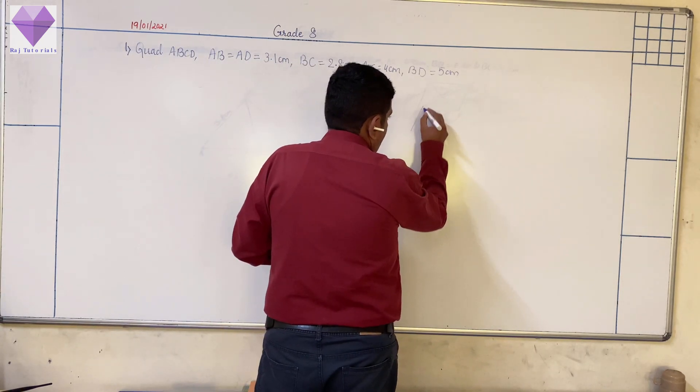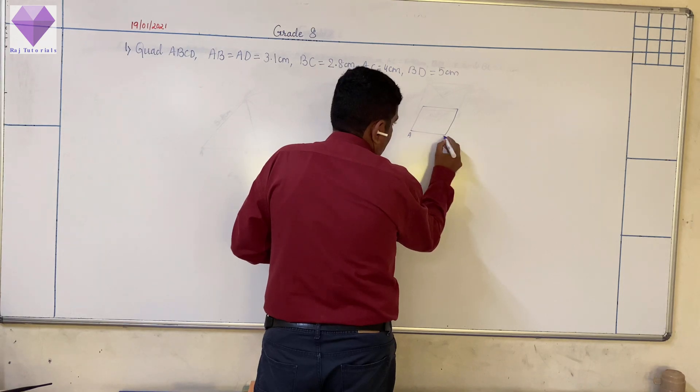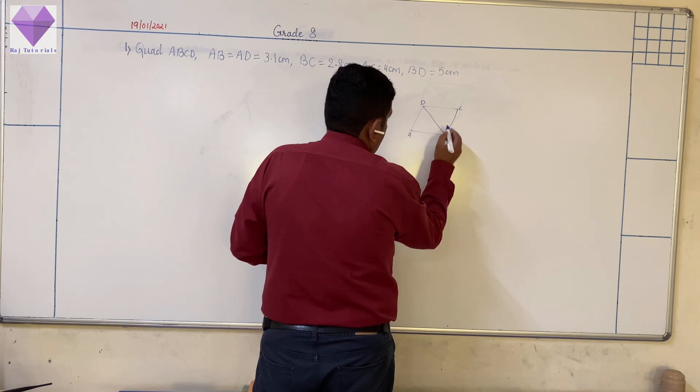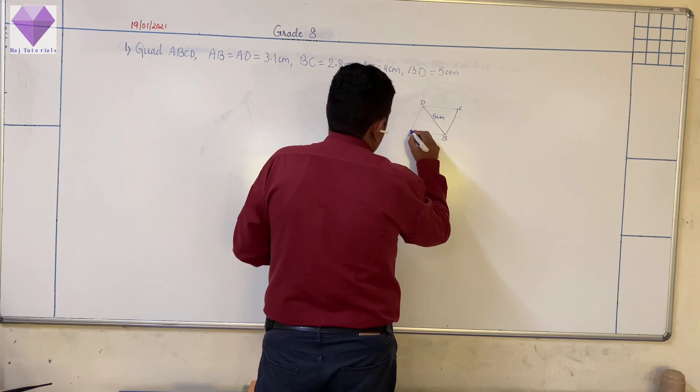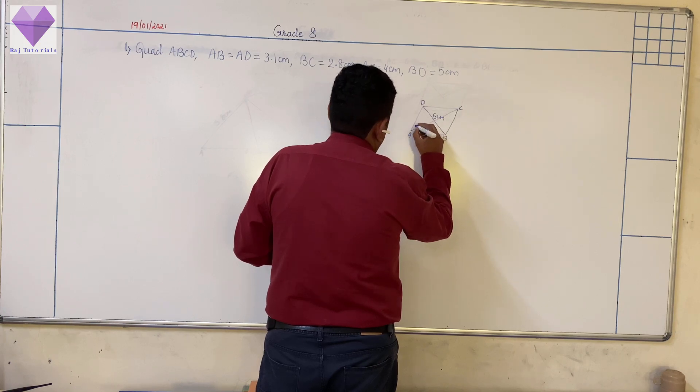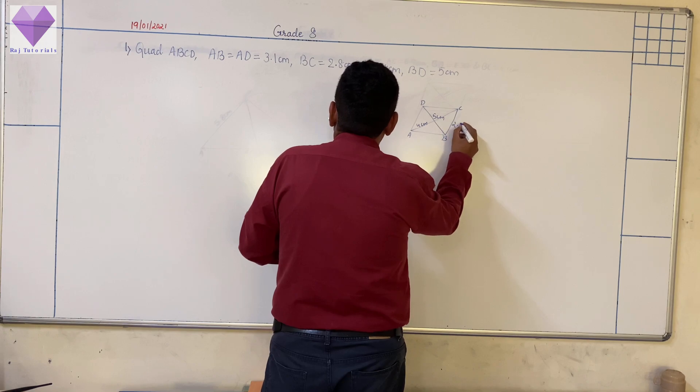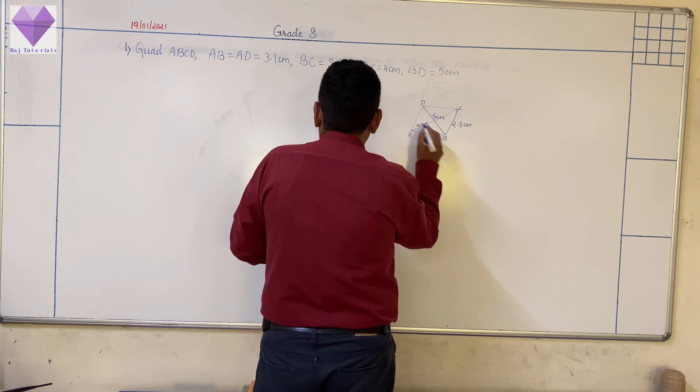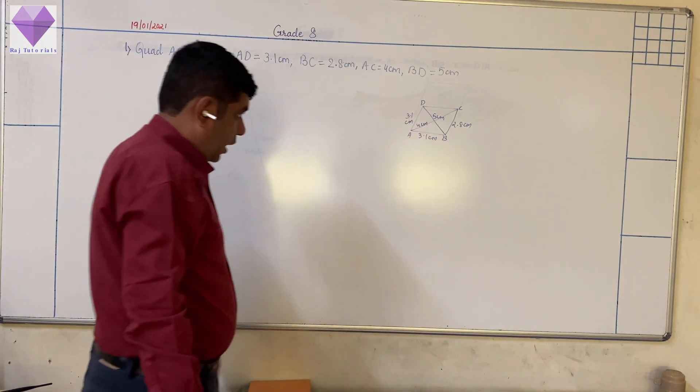So again, first I am drawing a rough diagram. So this is my ABCD and BD. BD is 5 centimeters, AC is 4 centimeters, BC is 2.8 centimeters, AB is 3.1 centimeters and AD is 3.1 centimeters.